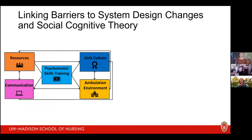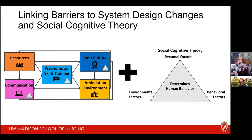The SEEPS model was helpful for seeing connections between all barriers we needed to address, but as Barb noted, we ultimately needed to facilitate behavior change — both for individual nurses and for group culture. We recognized that while we knew where to address barriers, we didn't have a strong theoretical basis for changing human behavior, so we integrated SEEPS with social cognitive theory, applying it specifically to the unit culture component, psychomotor skills training, and communication — the pieces with the strongest human behavior change element.